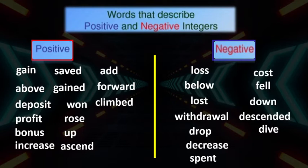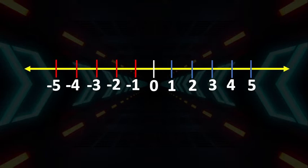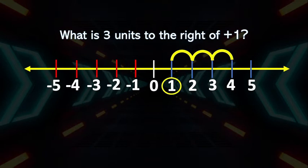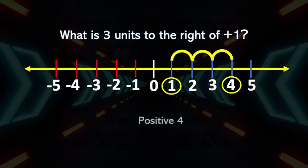Now, if we are asked this question: what is 3 units to the right of positive 1? It means that we need to move 3 units to the right of positive 1. 3 units to the right of 1 is positive 4. This represents addition — when we add 3 plus 1, that gives us positive 4.